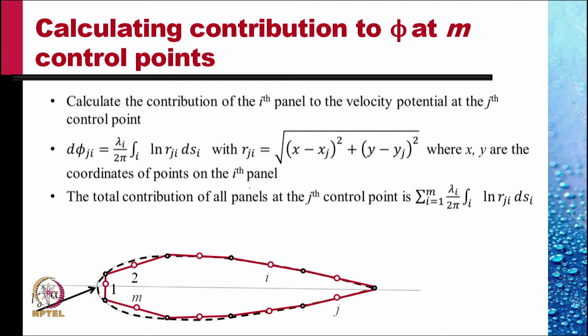Where r j i is under the root: (x minus x j) squared plus (y minus y j) squared, where x and y could be x i and y i.